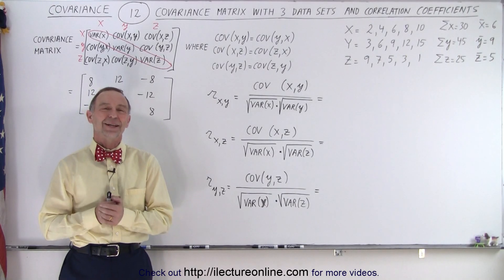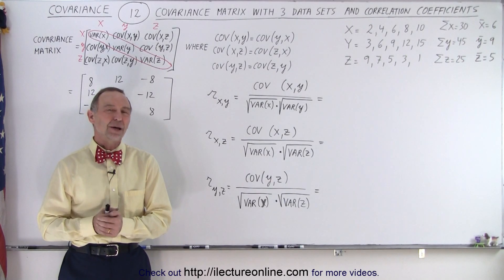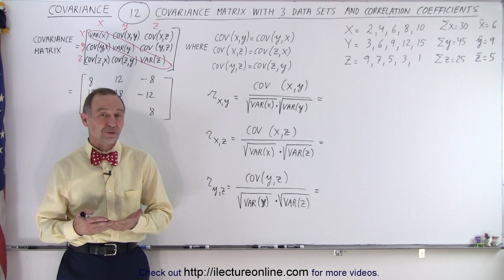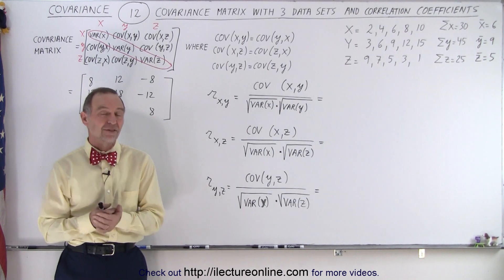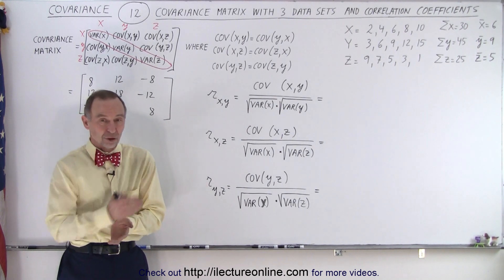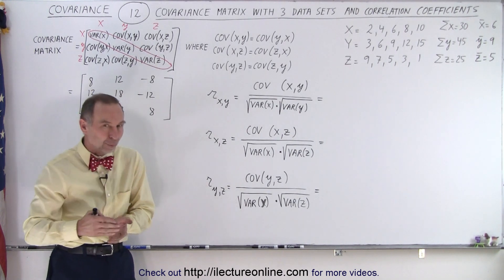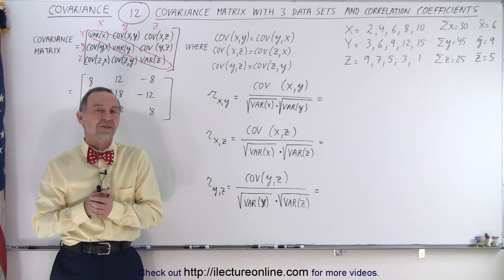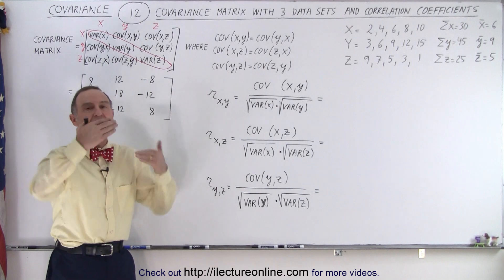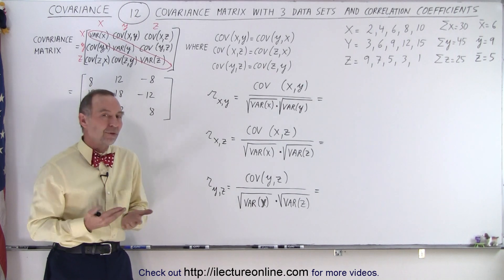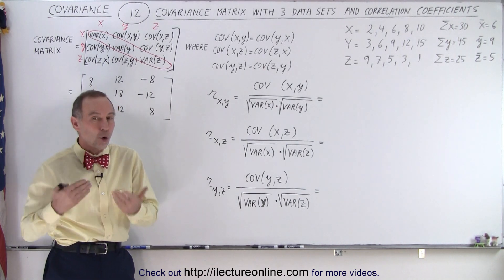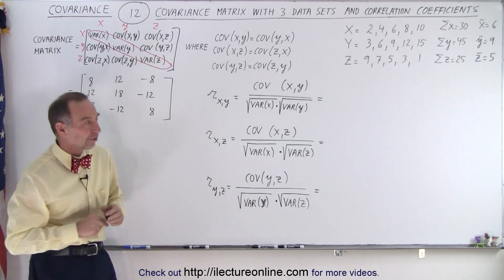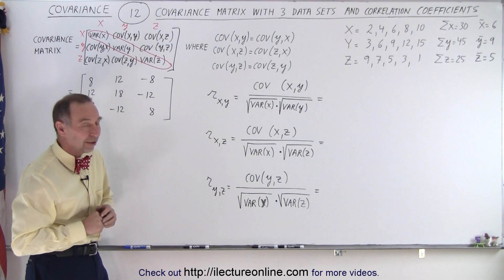Welcome to our lecture online. Now that we have a covariance matrix for three data sets, along the diagonals we have the variances of the three data sets, and the off-diagonal elements represent the covariances between the various data sets.